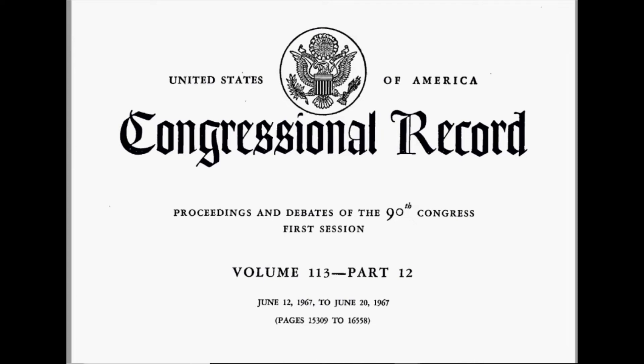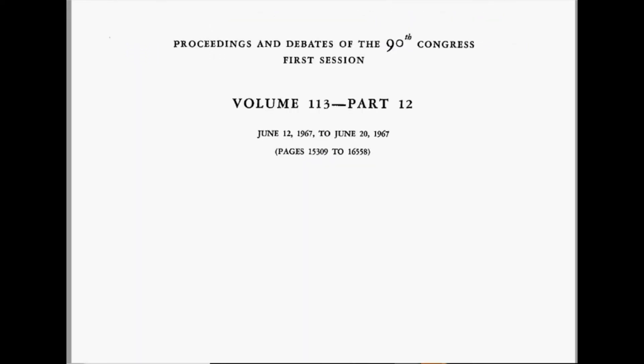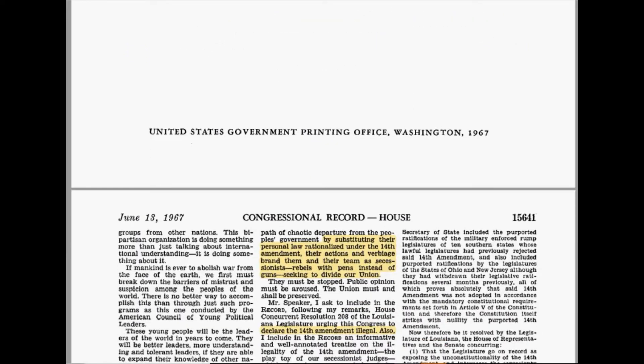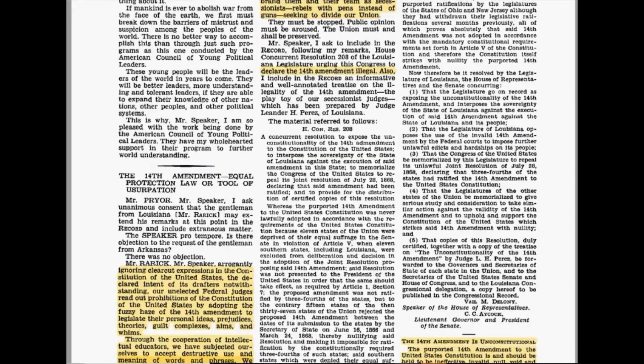I already took the liberty — congressional records. Now, this is a very great article because it goes into how null and void the actual 14th Amendment is. It is the 14th Amendment that allows people to accept privileges and benefits, making you a statutory citizen and making them have military occupation and authority over you. So homework for tonight is read the congressional record. I'm going to go through a few of these so we can get some understanding of what's going on.